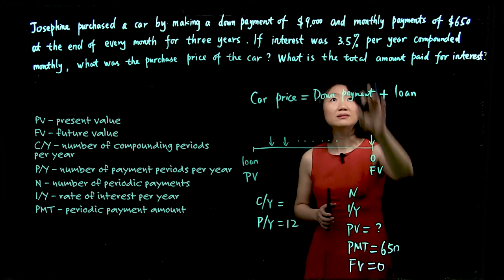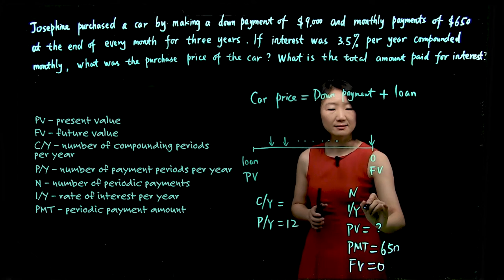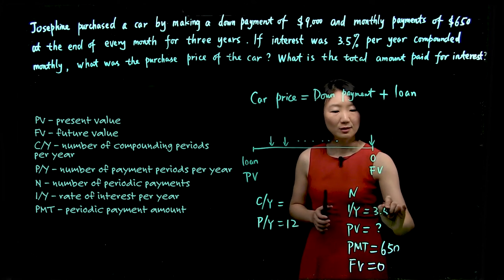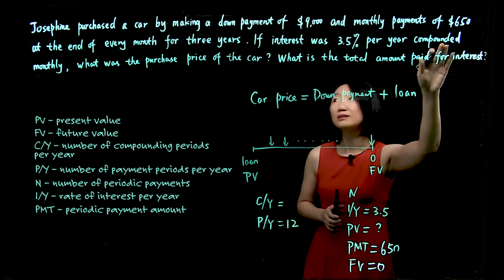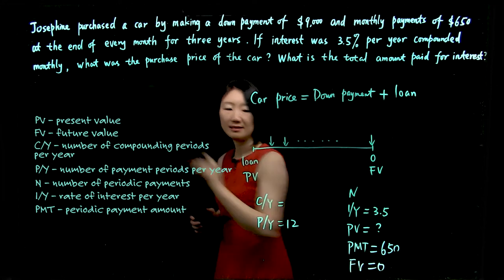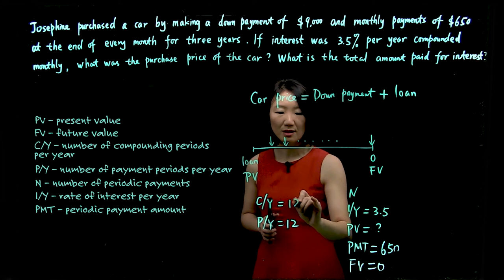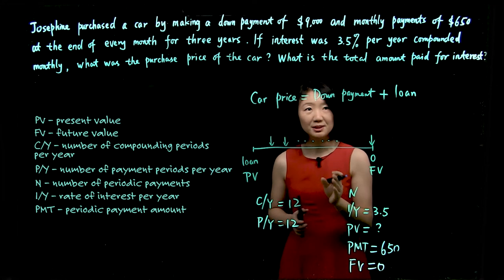We also look at interest, 3.5%. We will drop the percent sign for calculator entry. And we also know it's compounded monthly. So CY is also 12, 12 compounding periods per year.